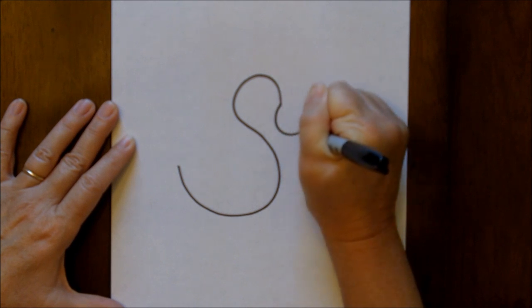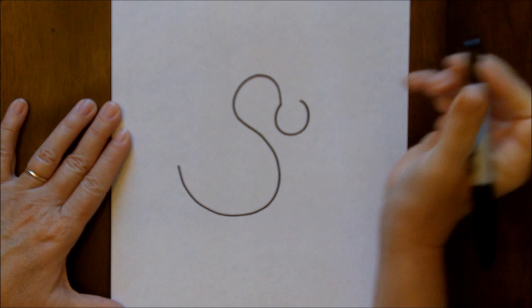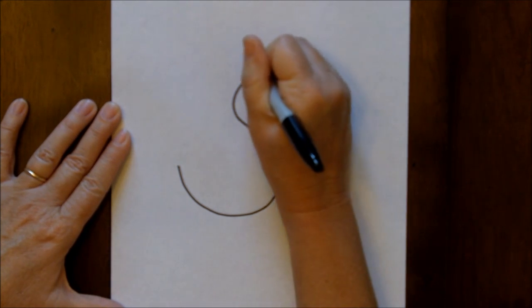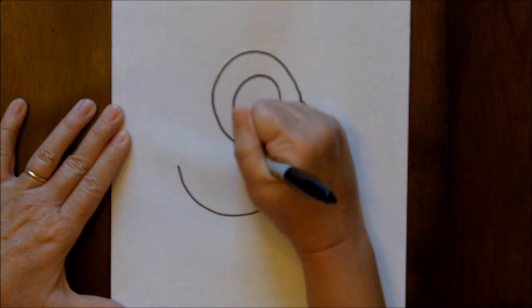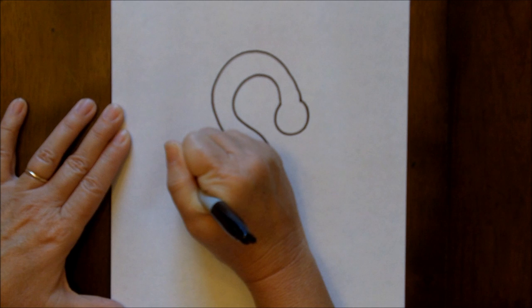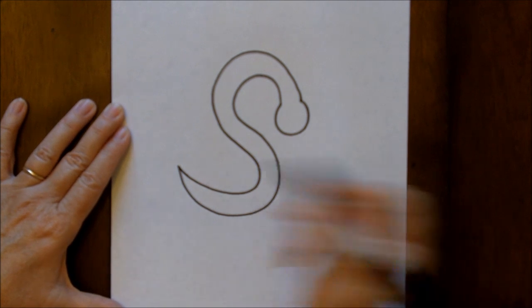We make a little part of the head like this, an upside down C. And then we come around and we basically follow the S shape with another S shape and then at the end of it we come and close it up.